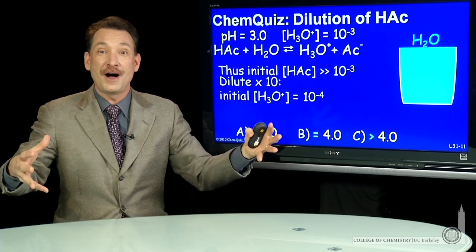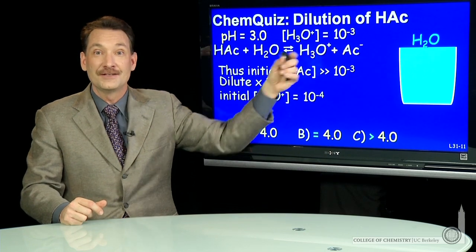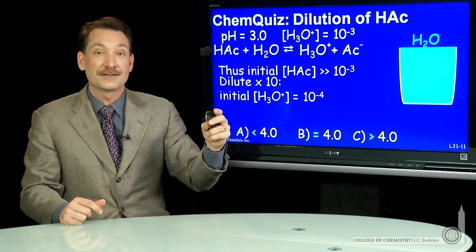If you have a greater volume, you make more ions to fill that volume. So a shift towards the product side.